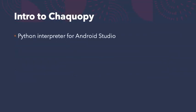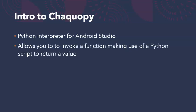Chiquapi is a Python interpreter for Android Studio that allows you to write as much or as little of your app using Python as you like. This means it's great for invoking a function inside your app that makes use of a Python script to return a value. It's easy to install and use, so let's go ahead and check it out.